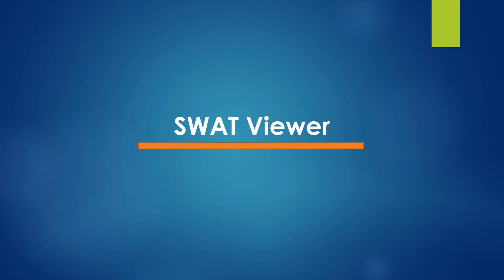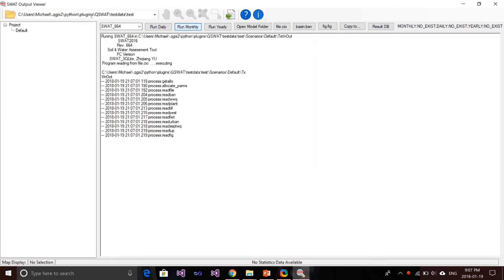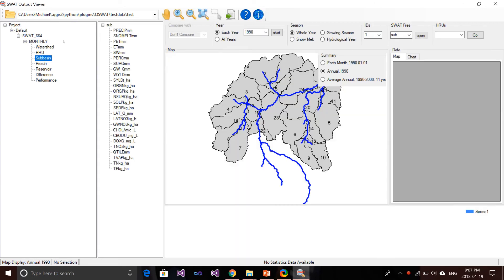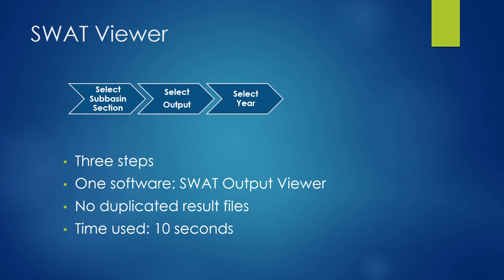Next, we will see how SWOT Viewer can do the spatial visualization. First, run the model — it's fast since it's monthly. Then select sub-basin, select sediment yield, and select year 2000. And it's done. With SWOT Viewer, to do the same spatial visualization you only need three steps, compared to other software like ArcSWOT and QSWOT. You just select the sub-basin section, select the outputs — sediment yield — and select year 2000. The map will be shown in the software. Very simple, just three steps.